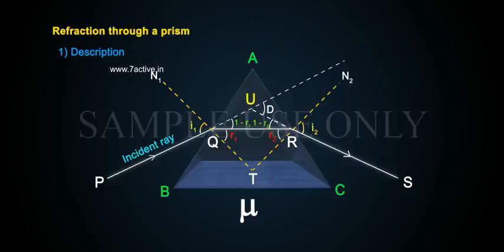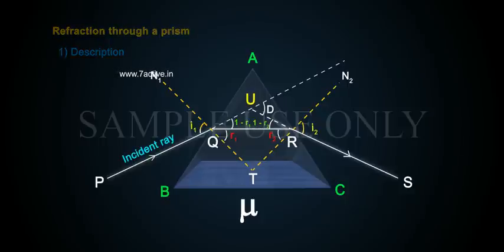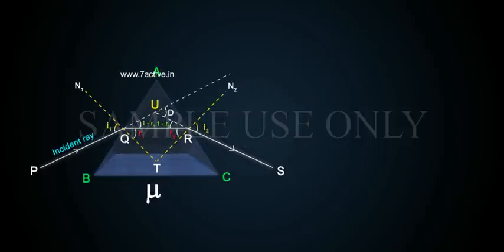Let D be the angle of deviation. The angle of deviation is the angle between the incident ray produced forward and the emergent ray produced backward.